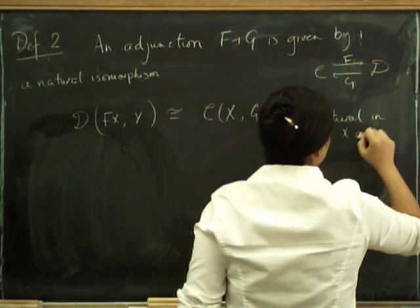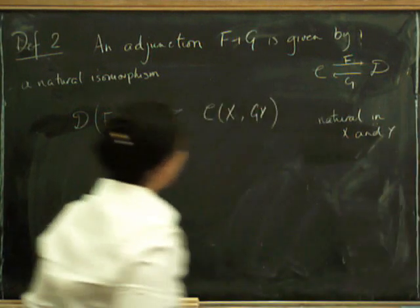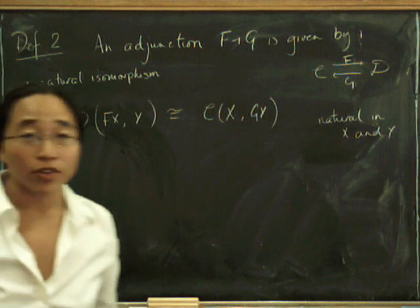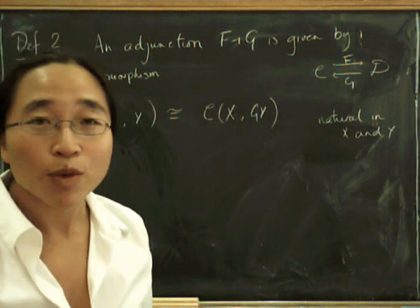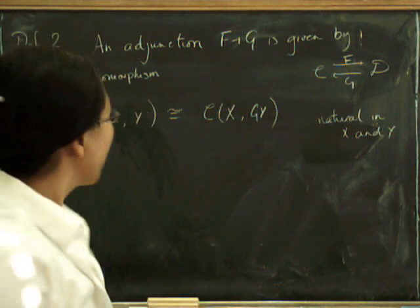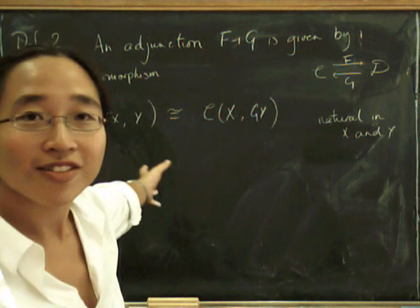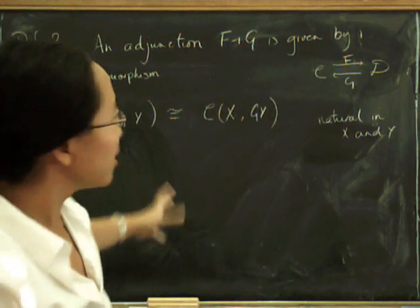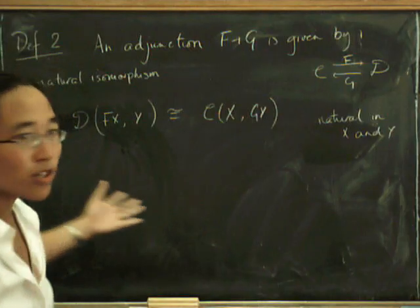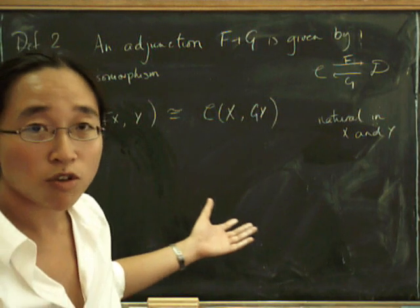You're probably thinking several things at this point. One is this has absolutely nothing whatsoever to do with the previous definition. Another thing you might be thinking is what on earth does natural isomorphism mean here, what does natural in X and Y mean? Usually you have a natural isomorphism between two functors. I haven't even said what the functors are.